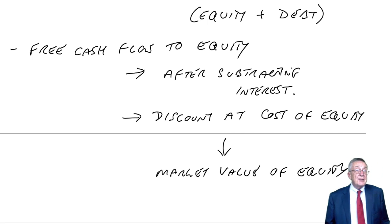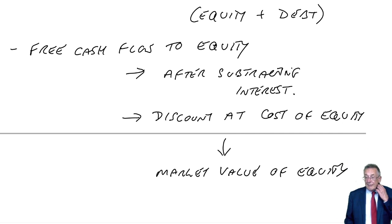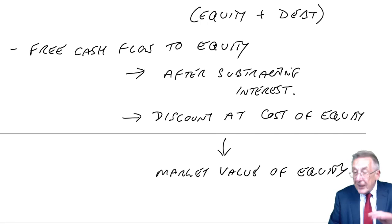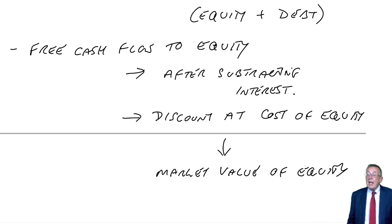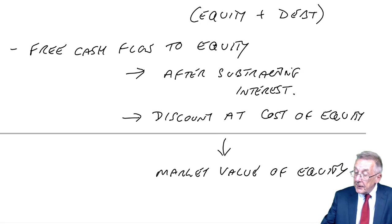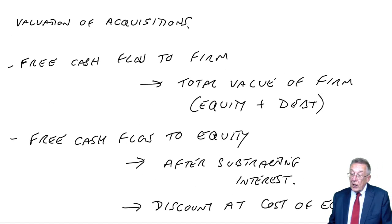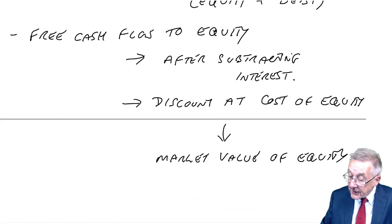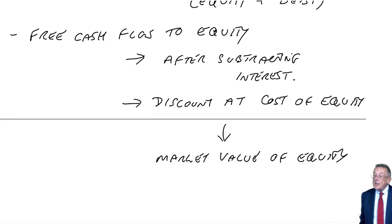Free cash flows to the firm, we ignore interest. We want the total for all providers of finance. Free cash flow to equity, we subtract interest to be left with the cash flow to the shareholders. Free cash flows to the firm, discount at the relevant overall cost of capital, gives us the total value of the firm. Free cash flows to equity, discount at the cost of equity, gives us the value of the equity. As simple as that.